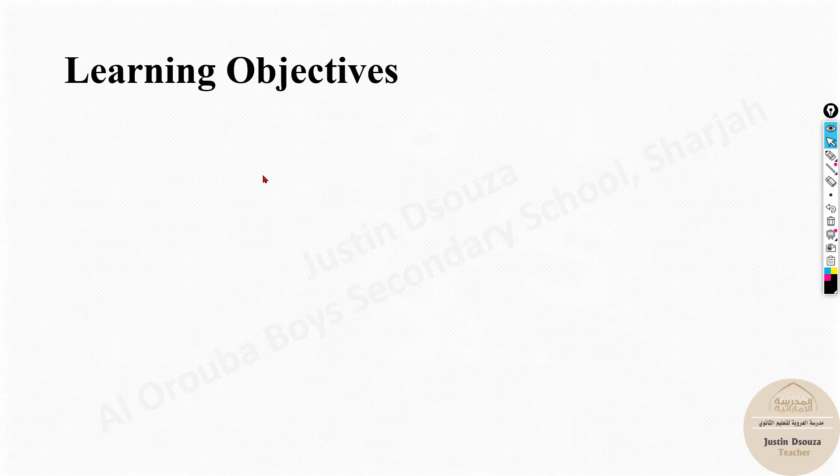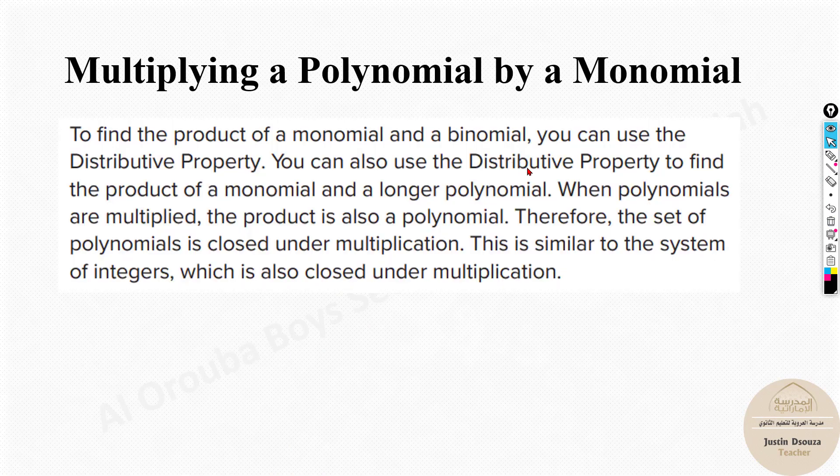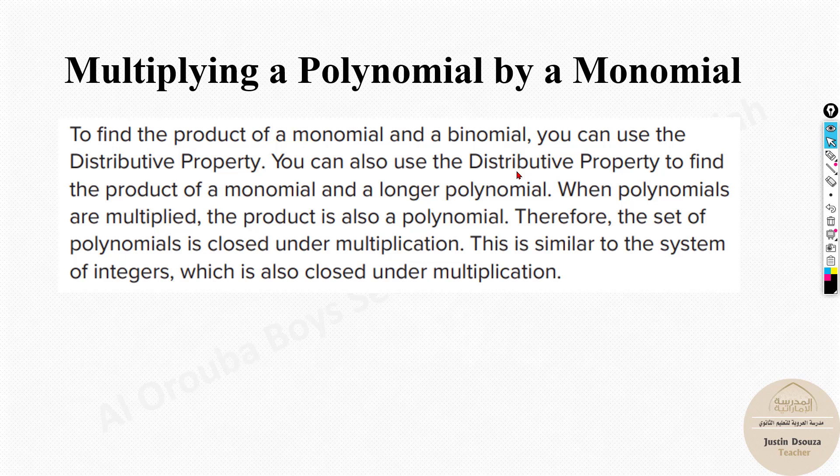We will see the learning objective. Multiply polynomials by monomials. So it tells you about basic multiplication using the distributive property and all that. We will see a problem and then you will understand thoroughly.